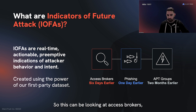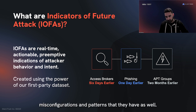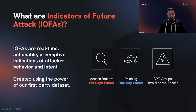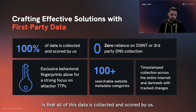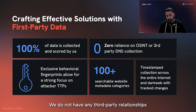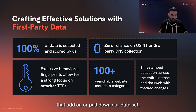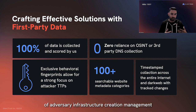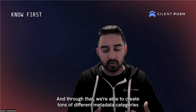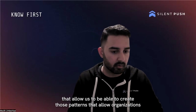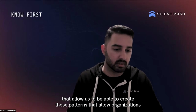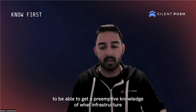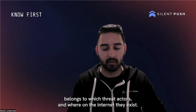This can include looking at access brokers, phishing campaigns, and we can also look at APT groups due to the mistakes, misconfigurations, and patterns that they have. All of this data is collected and scored by us — we have no third-party relationships with other vendors bolting onto our data set. We are entirely reliant on our own collection to do the best data science work to understand TTPs of adversary infrastructure creation and management, creating metadata categories that allow organizations to get preemptive knowledge of what infrastructure belongs to which threat actors.